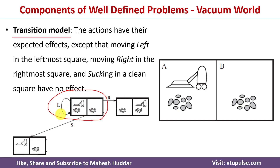From this state, there are three possible actions. If we perform the left action, since the agent is already in location A, it cannot move further left, so the state remains the same. If we perform the right action, the agent moves from location A to location B. If we perform the suck action, the dirt in location A is removed — the new state has location A clean, location B dirty, and the agent in location A. We must apply every action to every state to get the complete transition model.